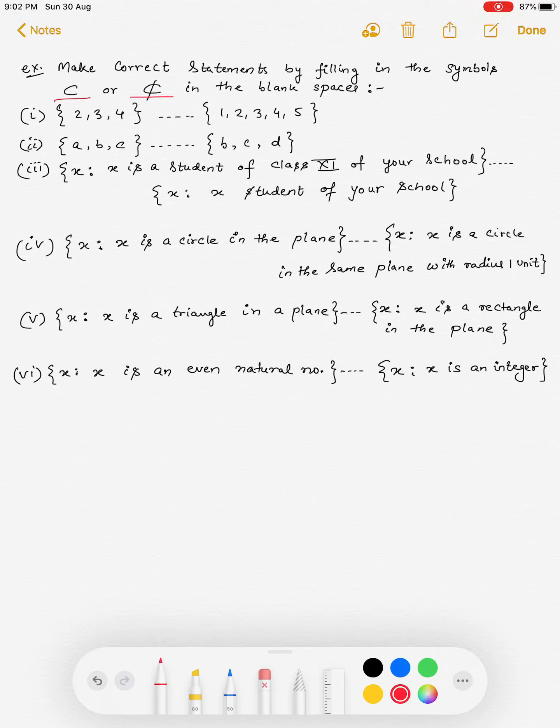A will be a proper subset of set B if A is a subset of B and A is not equal to B. इसको ऐसे भी बोल सकते हैं, if A is a subset of B and there exists an element in B such that it's not present in A, तो इसको बोला जाएगा proper subset.